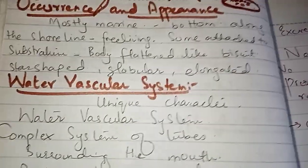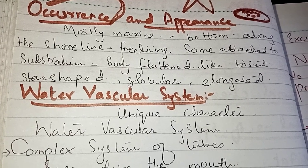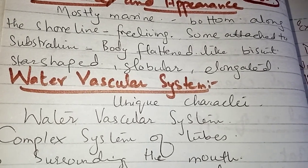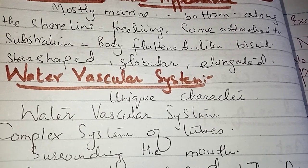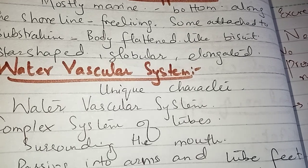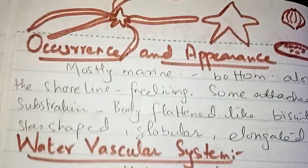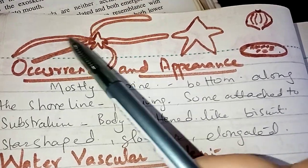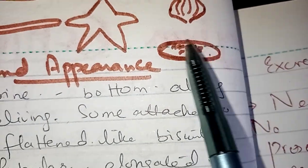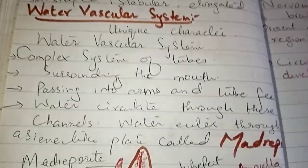Looking at the appearance, some members show different body forms: a flat body like a cake — that is the crinoid; a star shape with short arms — that is the starfish; a star shape with long arms — that is the brittle star; a globular shape — that is the sea urchin; and an elongated shape — that is the sea cucumber.